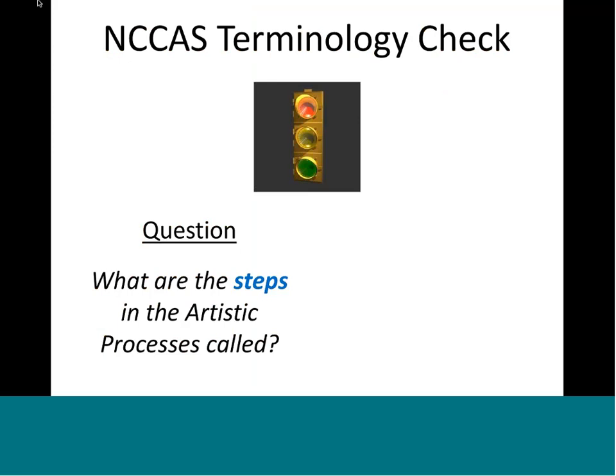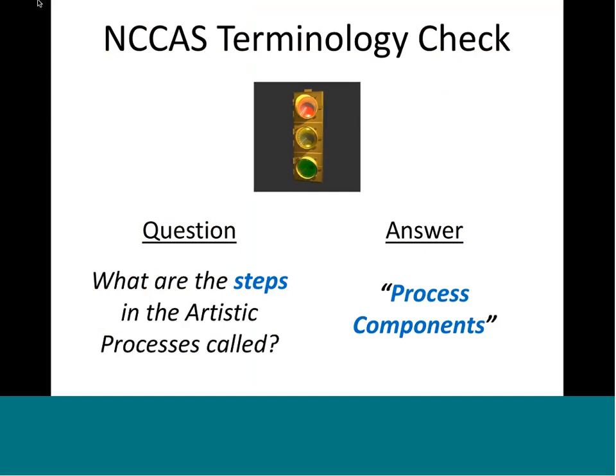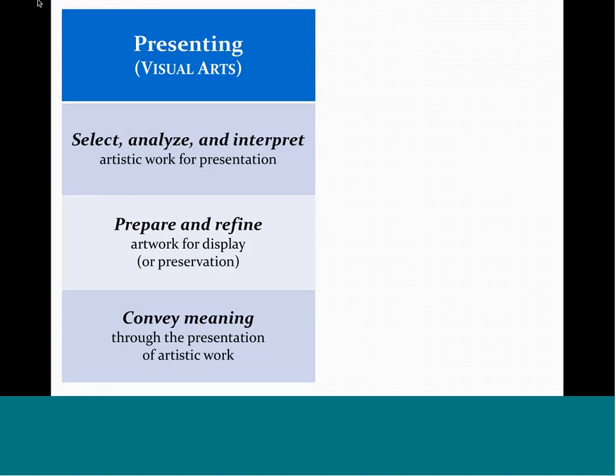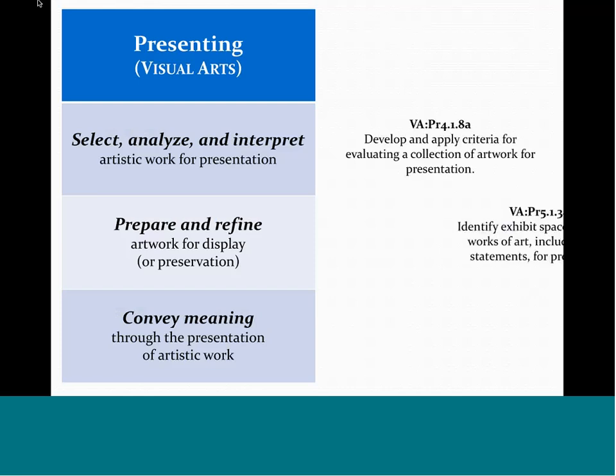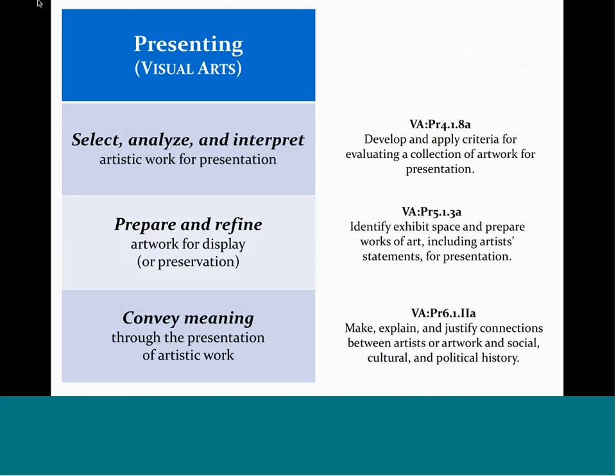The steps in the artistic processes in all art forms are called process components — that's a term you should become comfortable with. Here are the process components in visual arts for presenting, which is the visual arts version of the P verb. I've extracted examples of standards at different grade levels to show standards that go with those process components. All of the standards in all the art forms line up with a process component.